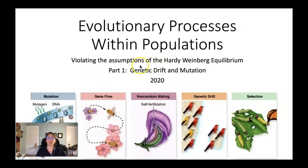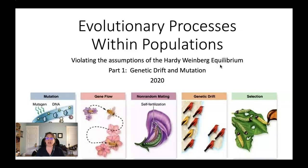Hey Bio102, I'm here recording for you a little bit about the other processes of evolution. We talked earlier this week about genetic drift, and today we're going to talk about mutation, gene flow, and non-random mating, and we'll get to selection after the break.